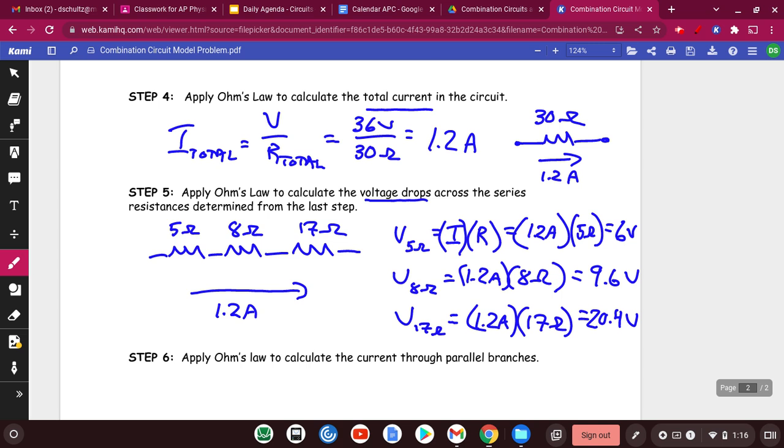The other thing we should look at is let's see if energy is conserved. And of course, when we're talking about circuits, what we really mean is let's see if the voltages basically add up. So I'm going to add 6 plus 9.6 plus 20.4, and I get 36.0 volts.